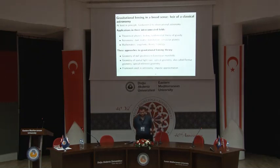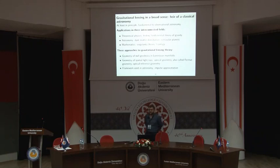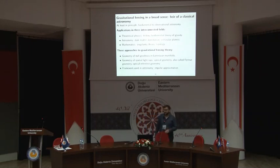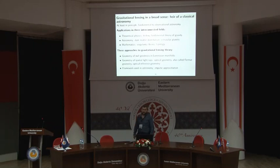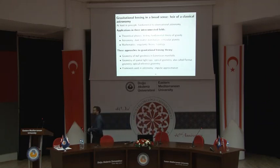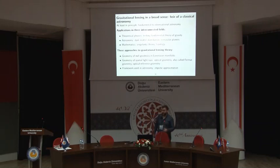Gravitational lensing is like a tool of classical astronomy with many applications. In theoretical physics we use it to test modified gravity theories. You can also use it to observe dark matter and other planets. In mathematics we use it for singularity theories and topology. There are different approaches to calculate gravitational lensing: one is the null geodesic method, as Professor Ahmed showed you. There is also optical geometry, known as Fermat geometry. Today I will explain the deflection angle using optical geometry and the Gauss-Bonnet theorem.